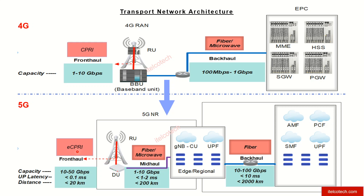In 5G, the fronthaul protocol is evolved and is termed as enhanced CPRI. It can achieve a maximum capacity of up to 50 Gbps and a lower latency of less than 0.1 millisecond.